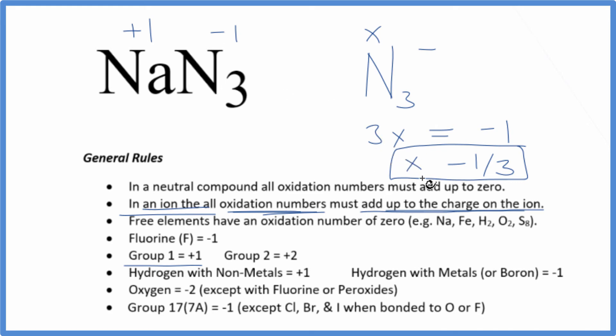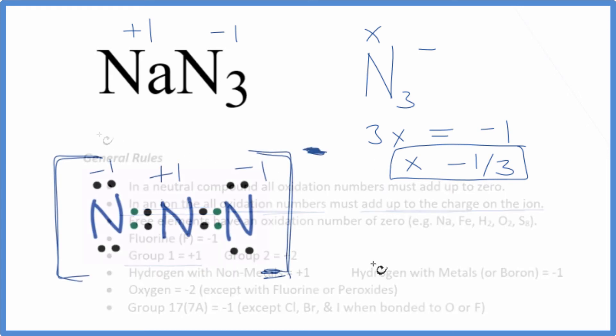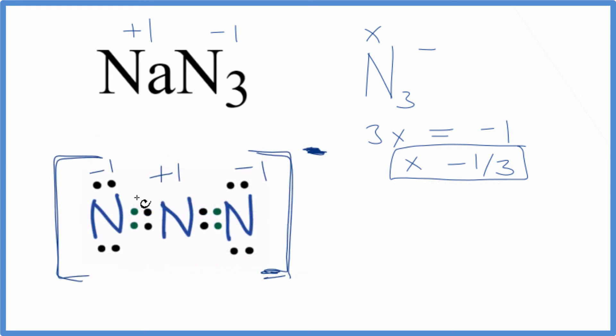If we look at the Lewis structure of the azide ion, it might help explain this. We can see the central nitrogen is +1, and on either side we have -1. These all add up to the charge on the azide ion, which is 1-.